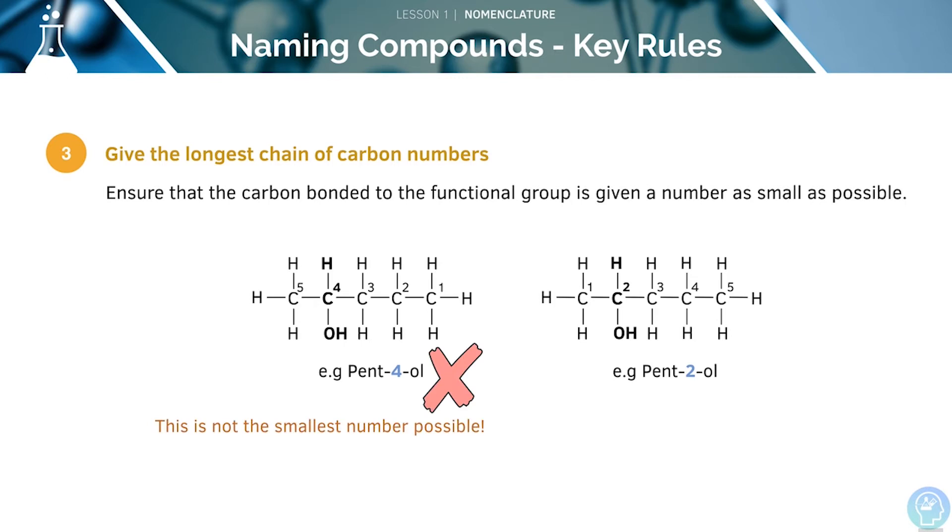However, we know that we need to give the carbon bonded to the functional group the smallest number possible. This means that pent-4-ol is incorrect, whilst pent-2-ol would be the correct answer.